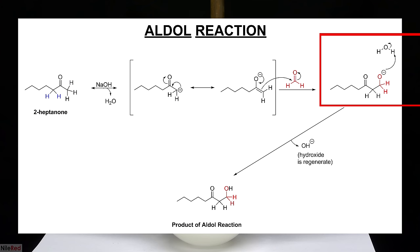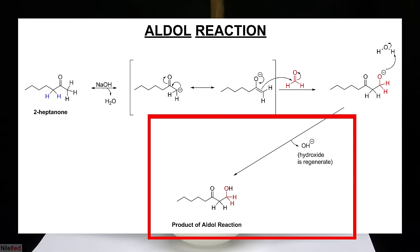After the intermediate attacks the formaldehyde, we form a new carbon-carbon bond. The negatively charged oxygen attacks a water molecule to form an alcohol group and the hydroxide that we used in the beginning is regenerated. There are two main products of aldol reactions, a beta-hydroxy aldehyde and a beta-hydroxy ketone. In this case, we have a beta-hydroxy aldehyde, but it's just an intermediate and we're going to be reacting it again in just a minute.